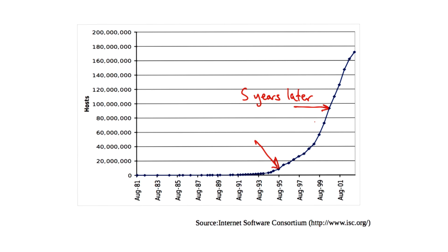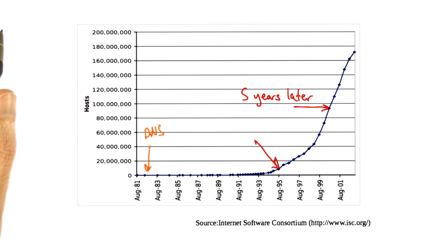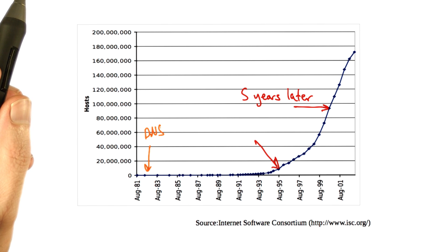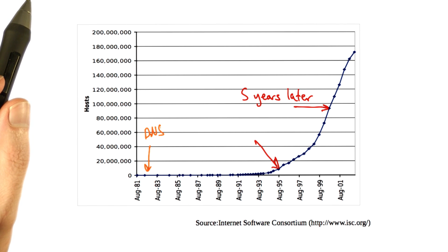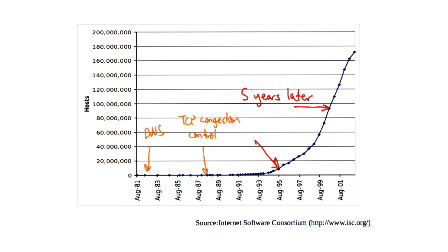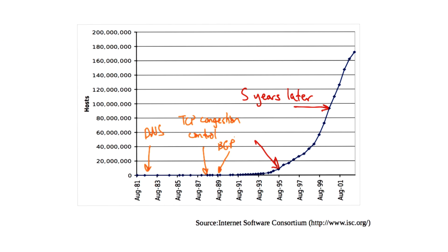During this period, the internet experienced a number of technical milestones. In 1982, the internet saw the rollout of the domain name system, which replaced the host.txt file containing all the world's machine names with a distributed name lookup system. 1988 saw the rollout of TCP congestion control, after the net suffered a series of congestion collapses. 1989 saw the NSFnet and BGP inter-domain routing, including support for routing policy.